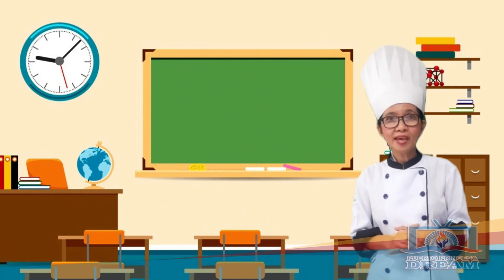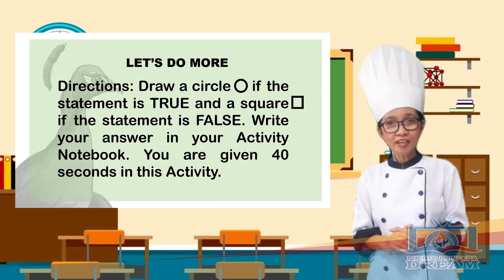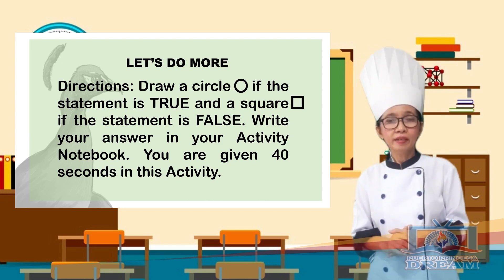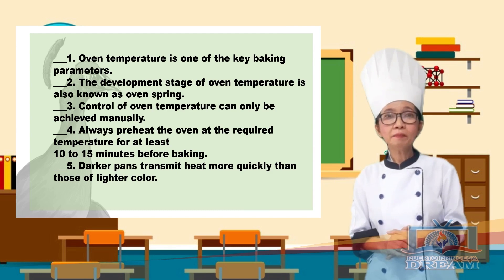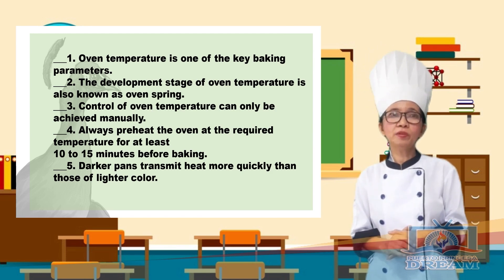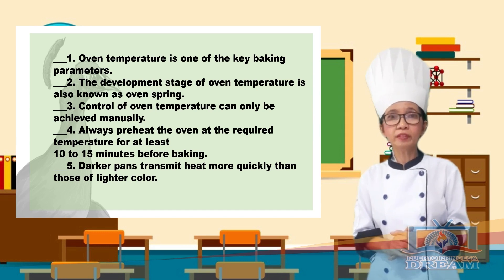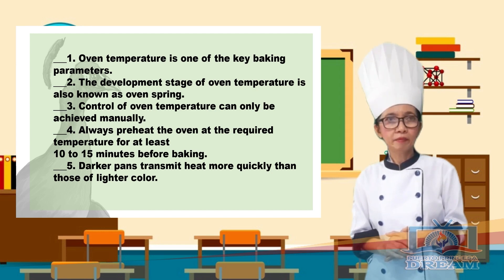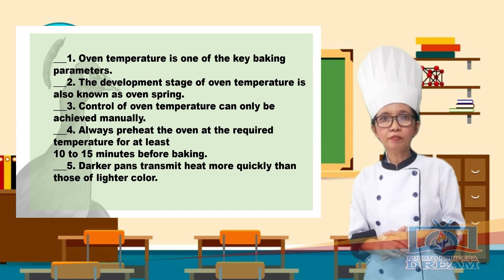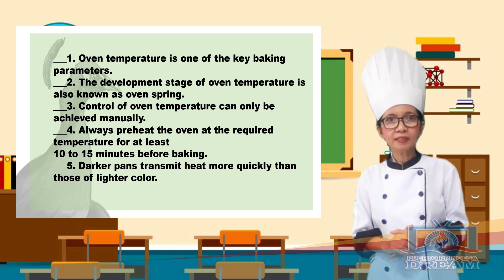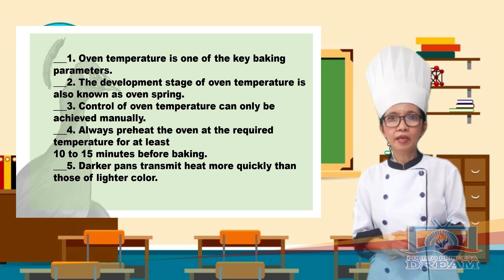Let's try to practice more by answering this 'Let's Do More' activity. Directions: Draw a circle if the statement is true and a square if the statement is false. Write your answer in your activity notebook. You are given 40 seconds. 1. Oven temperature is one of the key baking parameters. 2. The development stage of oven temperature is also known as oven spring. 3. Control of oven temperature can only be achieved manually. 4. Always preheat the oven at the required temperature for at least 10 to 15 minutes before baking. 5. Darker pans transmit heat more quickly than those of lighter color.